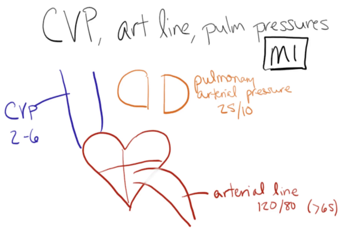In this video I'm going to talk about CVPs, art lines, and pulmonary pressures and how they change when you have a MI. First we're going to talk about a right ventricular MI and then we're going to talk about a left ventricular MI and how that might change these values and waveforms.